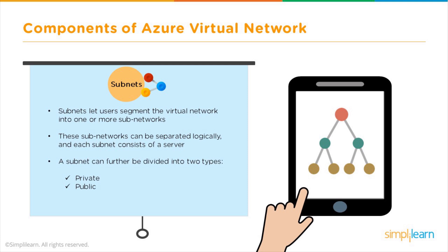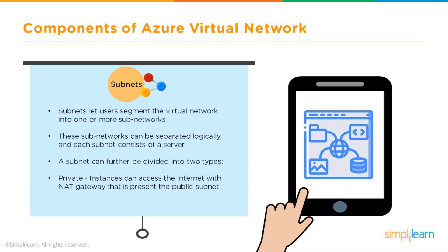A subnet can be divided into a public subnet and a private subnet. For the public subnet, it interacts directly with the internet. For the private subnet, internet access is blocked, making it completely isolated in the virtual network. If an instance in the private subnet needs internet connectivity, you can use a NAT gateway — a network address translator — which converts private to public addresses and vice versa, enabling internet connectivity to your private subnets.